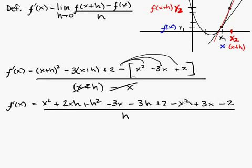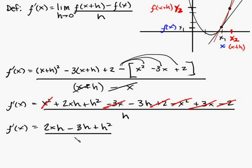So let's see, I can cancel out my x squared with my negative x squared, my negative 3x with my positive 3x, and I can cancel out my positive 2 with my negative 2. And so I'm left with this. f prime of x is equal to 2xh minus 3h plus h squared all over h.